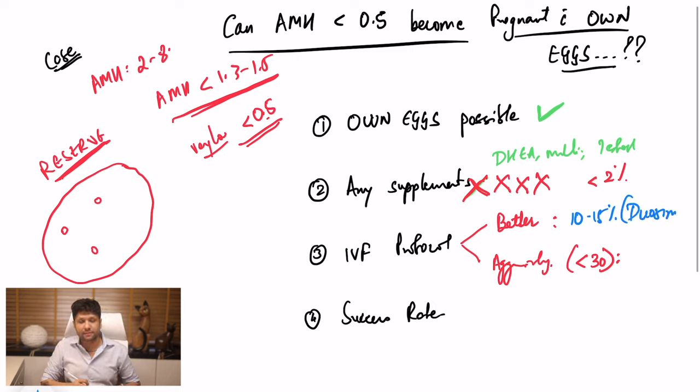Third, aur agar aap naturally try karte ho aggressively, woh bhi agar aapki age less than 30 hai, to aapko 3 to 4% chance hai pregnant hone ka in every month. Par ye please dhyan me rakhiye, zyada tar logo ko IVF suggest kiya jata hai, jisme double stimulation, jo duo stim protocol hai, woh use kiya jata hai.